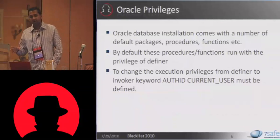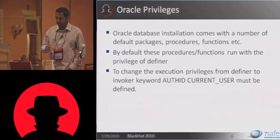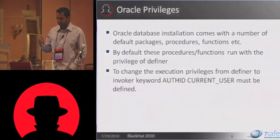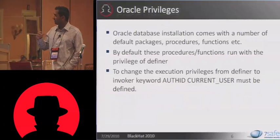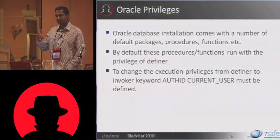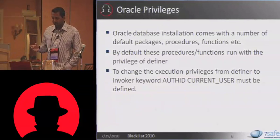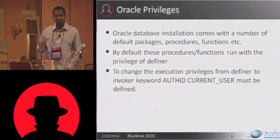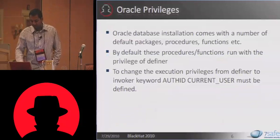A little bit of housekeeping before we start. Those of you not familiar with Oracle database: when you install Oracle database, it comes with a number of default packages, and these packages have a number of objects — procedures and functions. By default, these procedures and functions run with the privileges of the definer. A good way to understand this is to compare it with SUID files in Linux. If you want to change that and make it execute with the privileges of the invoker, then you must specify the keyword AUTHID CURRENT_USER. That means the procedure will then be run with invoker privilege.